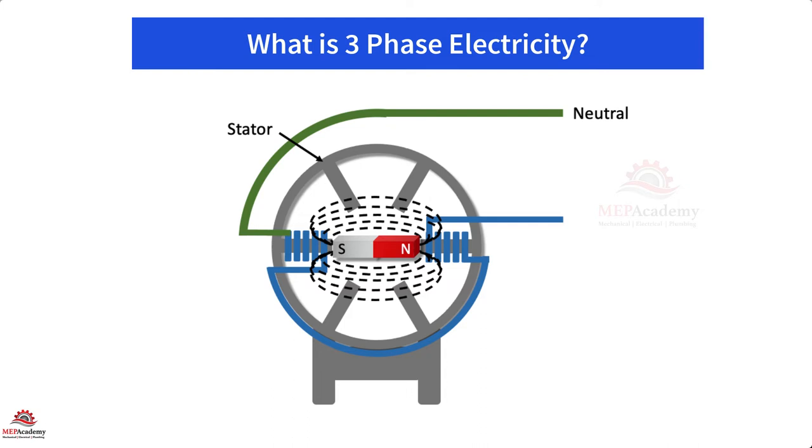We'll need to put these windings in a housing to hold everything together. Here is what a simple single-phase generator might look like. Now, as the magnet rotates within the stator, its magnetic field cuts through the conductors, inducing current to flow in an alternating back and forth pattern. Using only one conductor, we get a single-phase system.